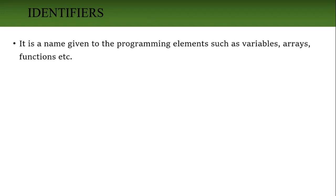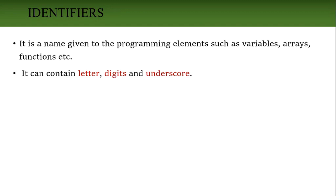First, identifiers. An identifier is a name given to a programming element. While writing the program, any element we use — a variable, an array, a function — we give it a name. That name we call an identifier. Identifiers contain letters, digits, and underscore symbol only.